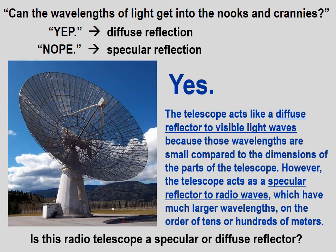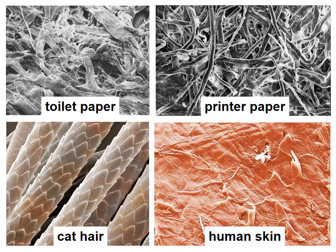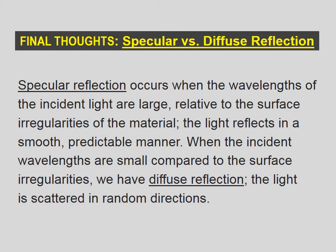Going back to the question: can the wavelengths of light get into the nooks and crannies? For this radio telescope, the answer is yes for visible wavelengths, but no for the very long wavelengths of radio waves. Many things which we take to be smooth are not. Specular reflection occurs when the wavelengths of the incident light are large relative to the surface irregularities — the light reflects in a smooth, predictable manner. When the incident wavelengths are small compared to the surface irregularities, we have diffuse reflection and the light is scattered in random directions.